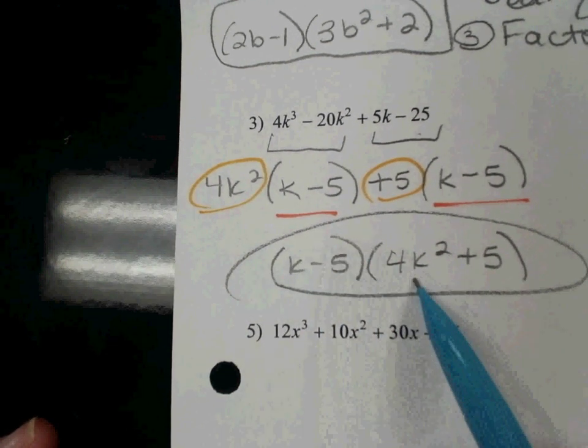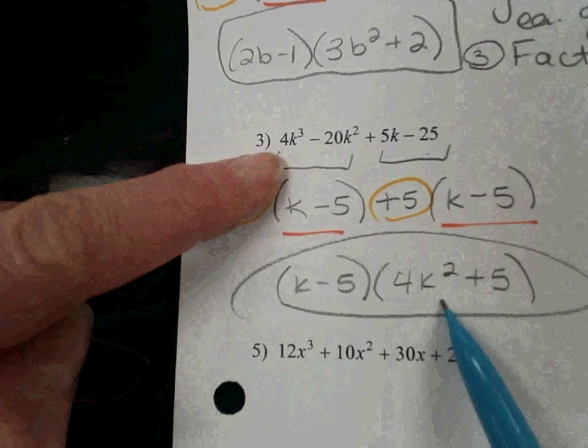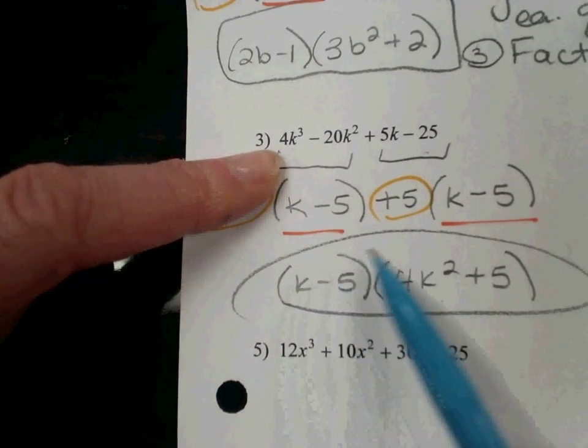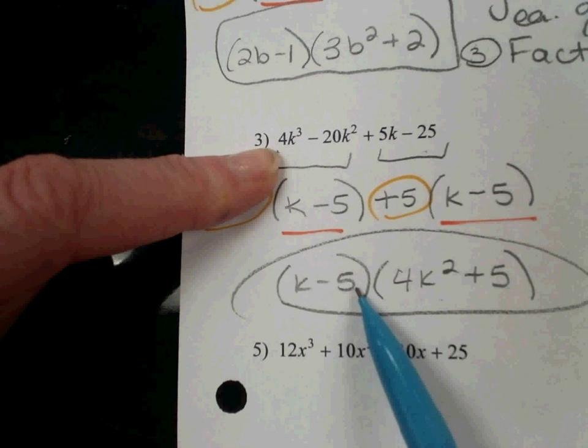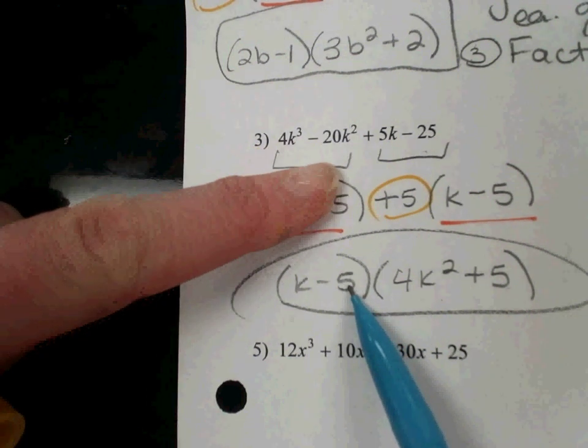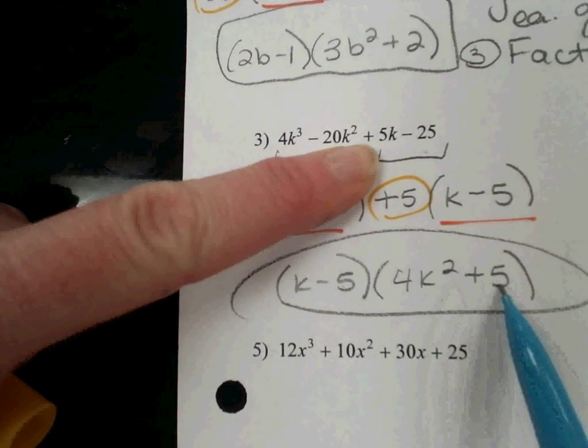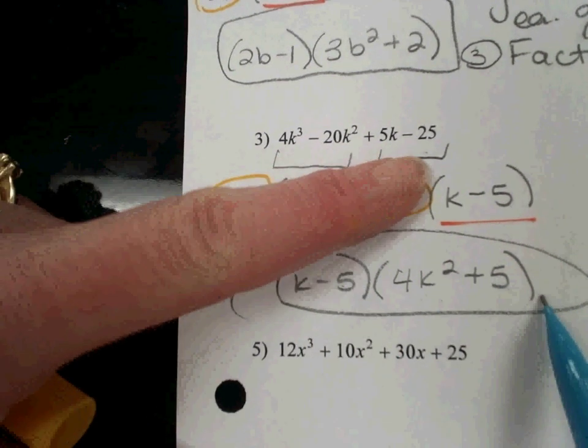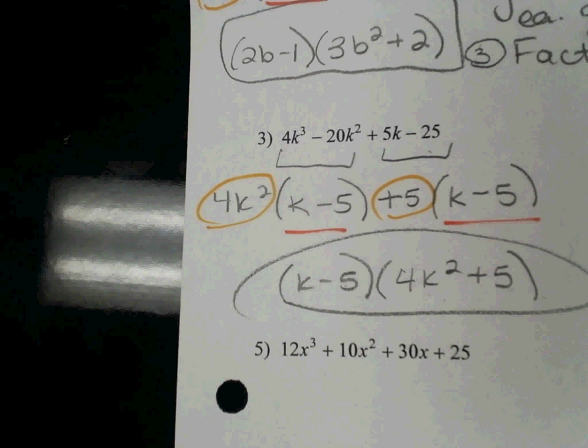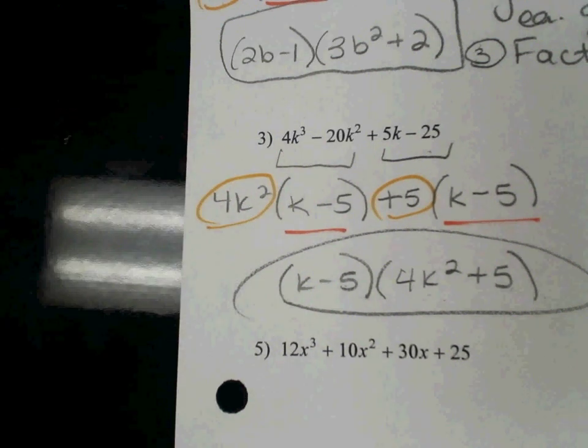And you can see how k times 4k² is going to give me my 4k³, and then I would have my minus 20k². You can see that with the negative 5 times the 4k². You can see the plus 5k here and the minus 25 here. So if you distribute it, you end up right where you started.